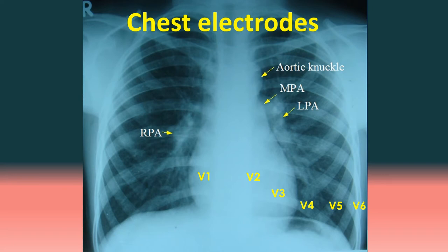Six electrodes are placed on specifically designated parts of the chest to obtain chest lead recordings. V1: 4th right intercostal space, right sternal edge. V2: 4th left intercostal space, left sternal edge. V3: midway between V2 and V4. V4: 5th left intercostal space, midclavicular line. V5: anterior axillary line, same horizontal level as V4. V6: midaxillary line, same horizontal level as V4.